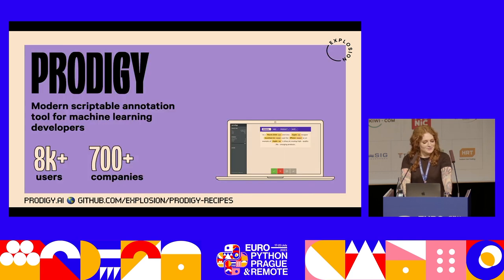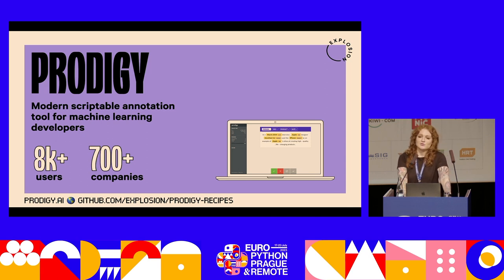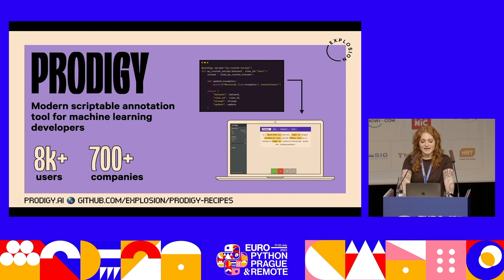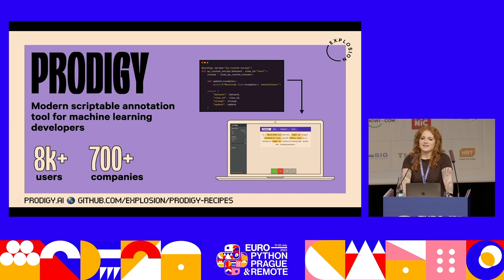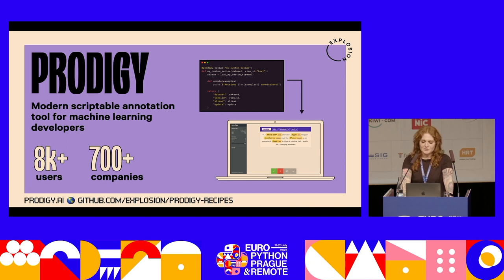The other thing we're doing is Prodigy. Prodigy is an annotation tool for machine learning developers to create training data for machine learning models. It's fully scriptable in Python, so it really easily integrates with everything in the ecosystem and also a lot of new developments in the field.